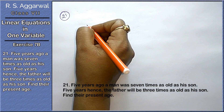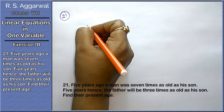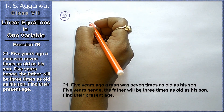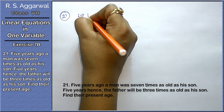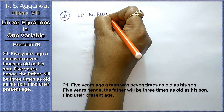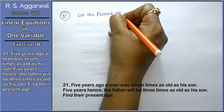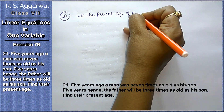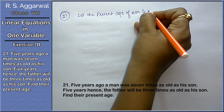The 21st question is: 5 years ago a man was 7 times as old as his son. Let the present age of the son be x.